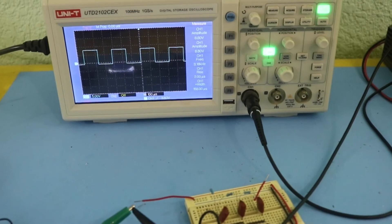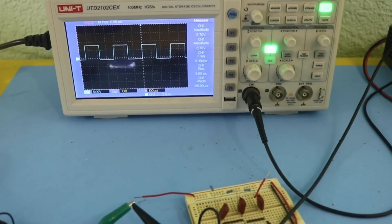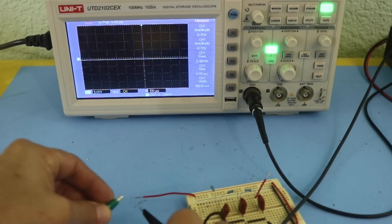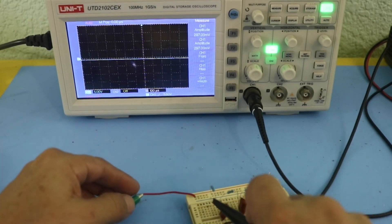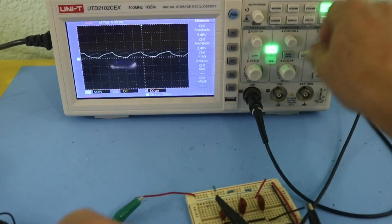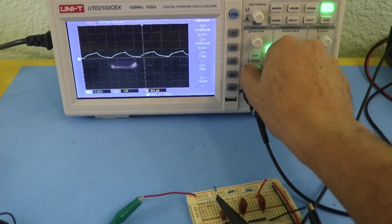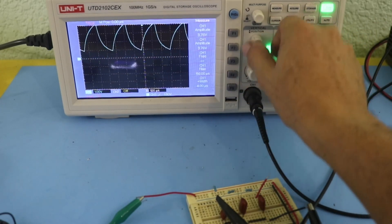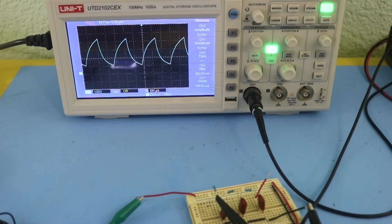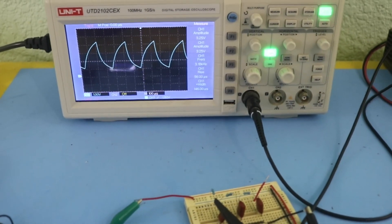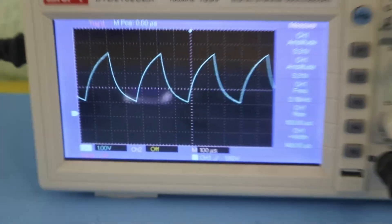Let me now connect the first stage of the circuit. Okay, let me adjust the oscilloscope and here we have the output of the first stage.